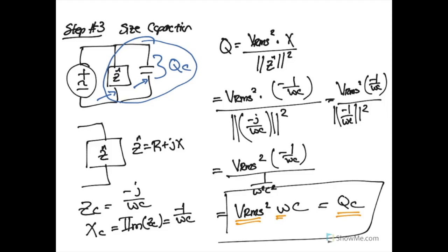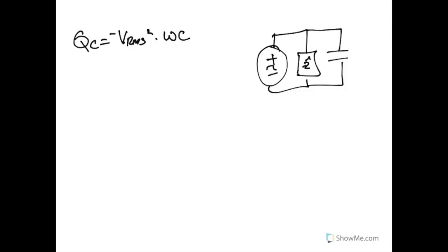ω is 2πf, so we'll need to assume a source frequency. Assuming a standard US power supply, we'll use 60 hertz. Also, let's make sure not to forget the negative sign, because this is a negative reactance. Now let's determine the final value we need for C.